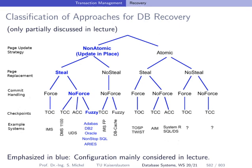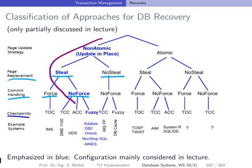There is a classification of approaches for database recovery based on different system configurations, such as the page update strategy, page replacement (steal or no-steal), commit handling (force or no-force — not to be confused with the forced lock at commit rule), and checkpointing strategies as discussed. Combining these different configurations yields various database recovery systems. Some prominent examples using these configurations are DB2 and Oracle.